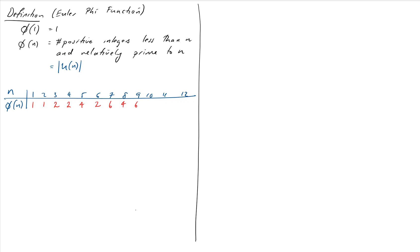And 10, sorry, 10 has 4. We've looked at U of 10 and U of 12 a couple of times. They both have 4. And 11 has 10 things relatively prime to it. So you notice that for a prime number, phi of p equals p minus 1 for p prime.